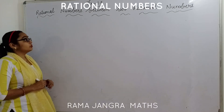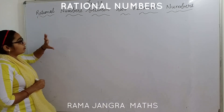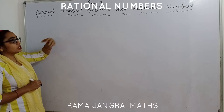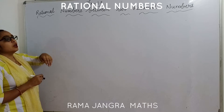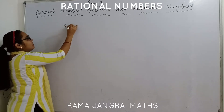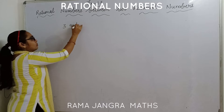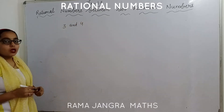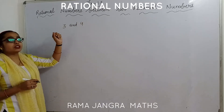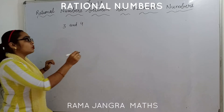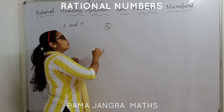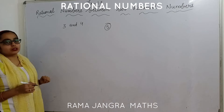Now, next one. I have told you when denominators are same, how to find out rational numbers. Now suppose we have 3 and 4. These two natural numbers or integers are given. We have to find out 5 rational numbers between these two numbers.